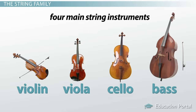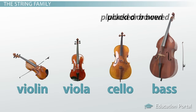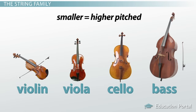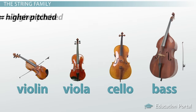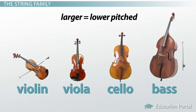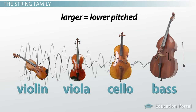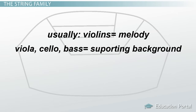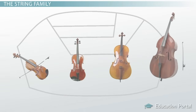Each of these instruments can be plucked or bowed. The main difference between the four instruments is their size — the smaller the instrument, the higher the pitches it plays, and the larger the instrument, the lower the pitches. A very common arrangement would have the violins playing the melody and the violas, cellos, and basses playing supporting roles.